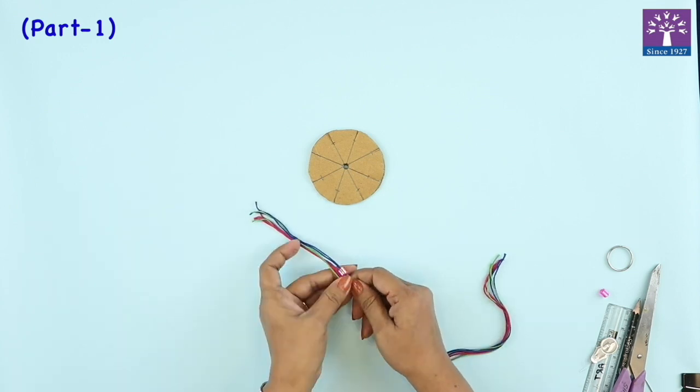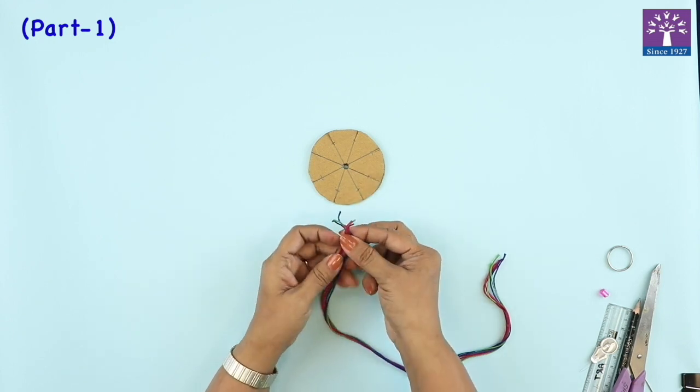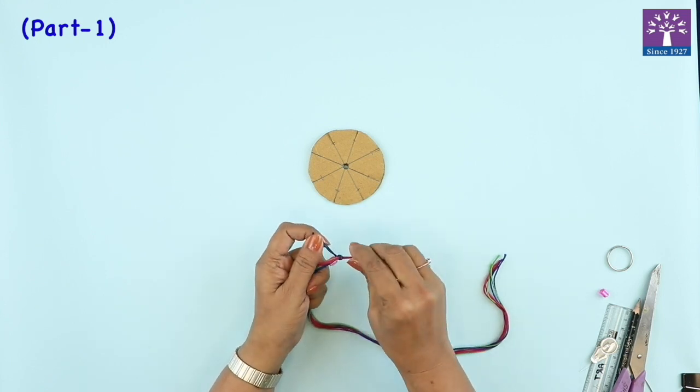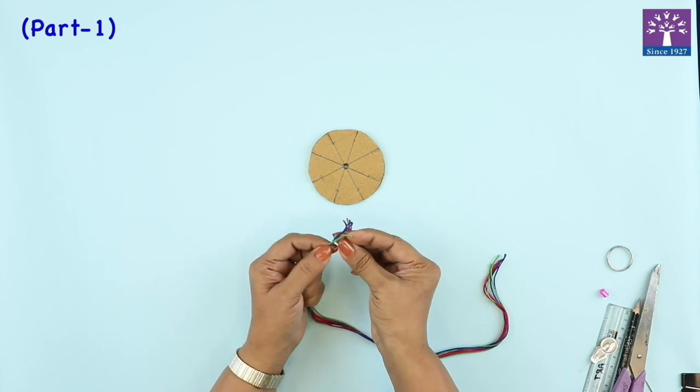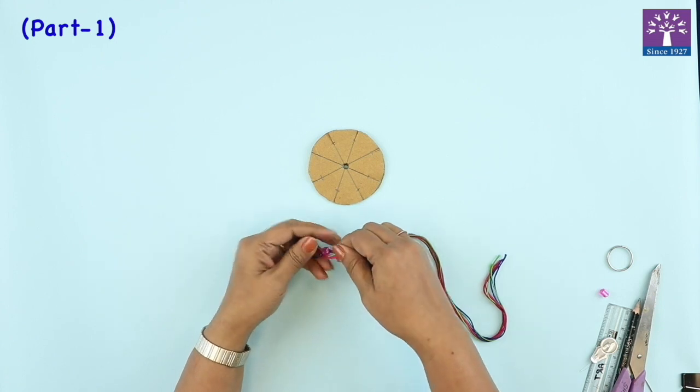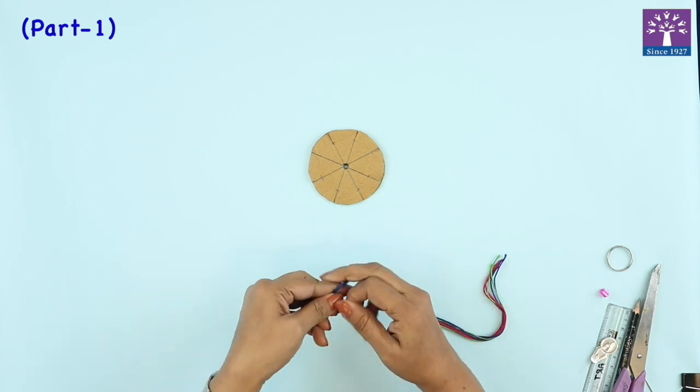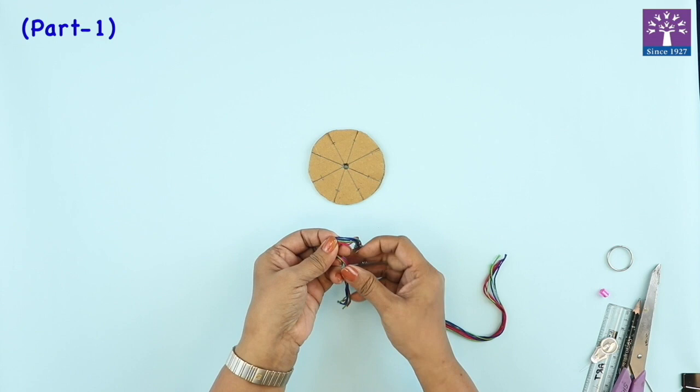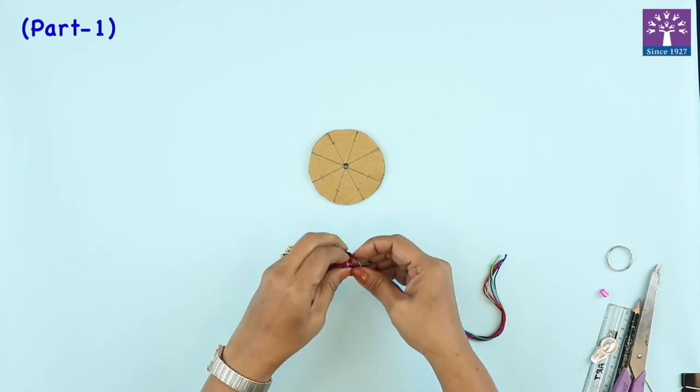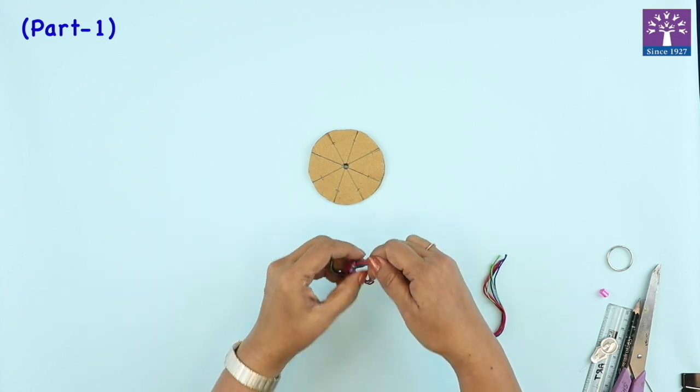So I have slipped a fancy bead at one end. I'll just tie a knot. If you don't want to slip a bead, it is okay, but it will look nice. And then I'll tie one knot, holding all the seven strands together, and slip the knot closer to the bead.